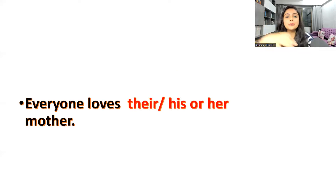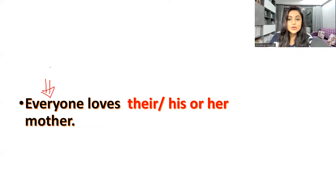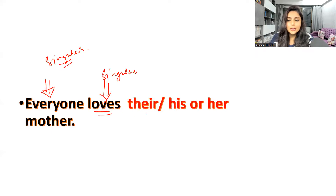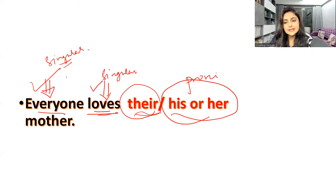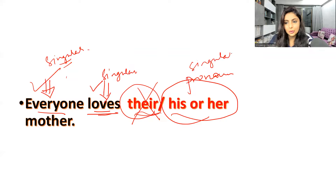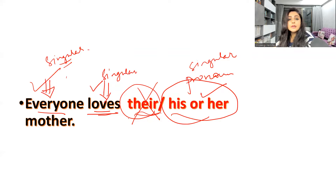Now we come back to the sentence with which we started the entire video. You have learned in this video that 'everyone' is always treated as singular. Because it is singular, the verb will also be singular — 'loves' is a singular verb here. But what about the pronoun? Should 'their' come, or 'his or her'? Since everything is singular — everyone is singular, verb is singular — we cannot use a plural pronoun. 'Their' is plural, so it is incorrect. 'His or her' is correct. So we always say: 'Everyone loves his or her mother.'